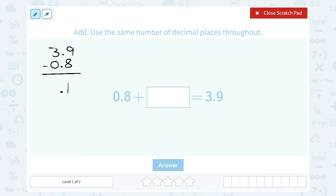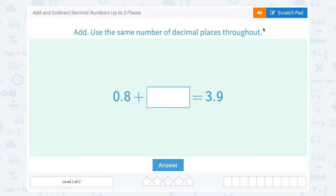In the ones place, we have 3 minus 0, which leaves us with 3. So we get 3.1, so the missing number must have been 3.1.